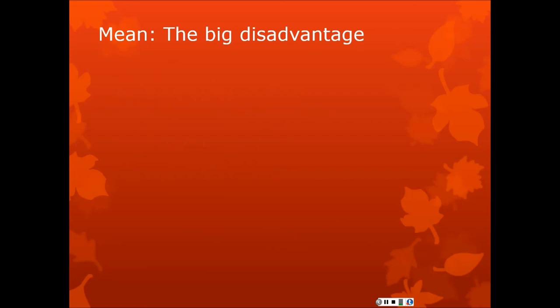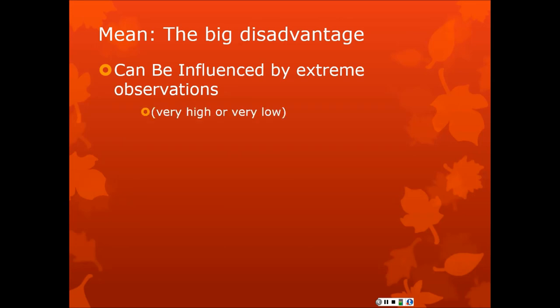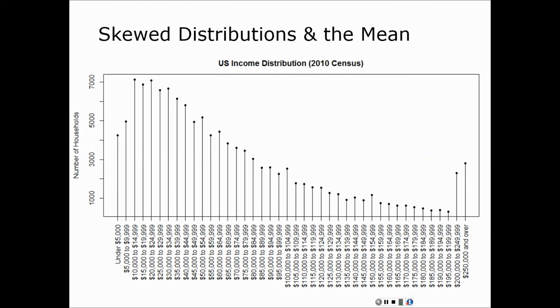So the mean has one big disadvantage. It can be influenced seriously by extreme observations, either very high or very low observations that are not typical of the rest of your data set, will pull the mean in their direction. So it's not great for skewed distributions because it will be non-representative. So here's a dot and line plot. It's a histogram essentially, but the dots help you see a few things here. Imagine those are bars instead of dots and lines. It's the same thing. You've got the categories down here at the bottom. So here's a U.S. income distribution from the 2010 census. That's a skewed distribution.